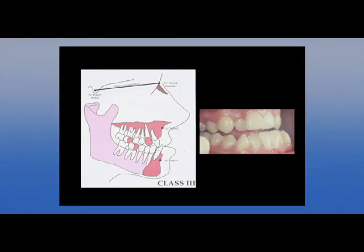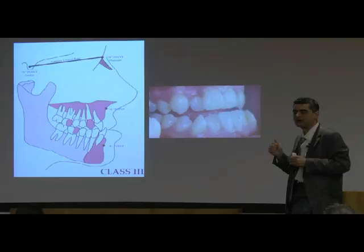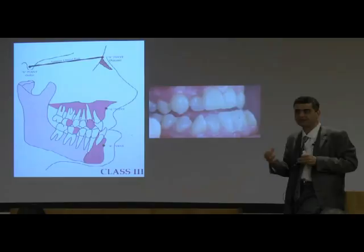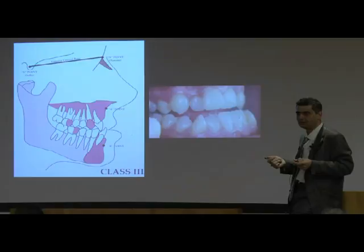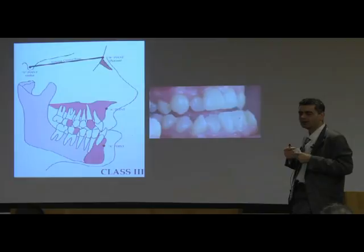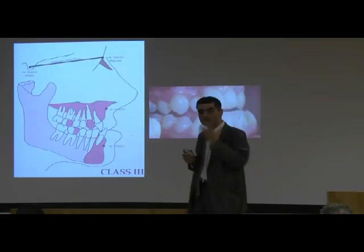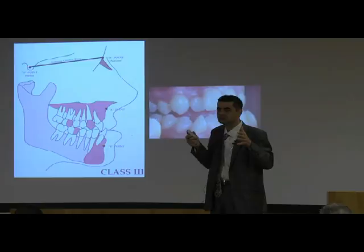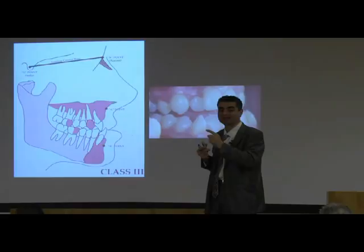The most common skeletal 3 is a maxillary deficient class 3 patient, which means their maxilla is hypoplastic — retrognathic. When you draw their anterior arc, their mandible will be on the arc but the maxilla is set back. The treatment of that patient is to treat early; they will probably require a face mask. Whether they require expansion depends on the width of their maxilla.